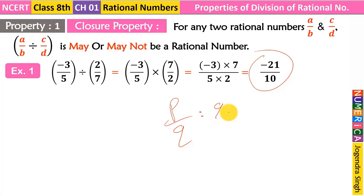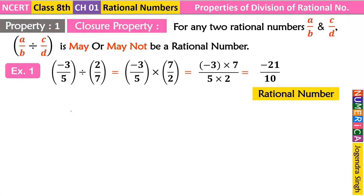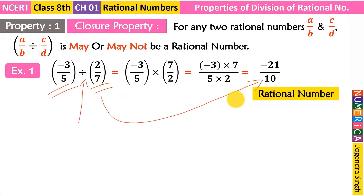The condition for a rational number in P upon Q form is that the denominator cannot be equal to 0. After calculation we got minus 21 upon 10, which is a rational number. So according to this example, rational numbers' division appears to be closed. But we need to check more examples, because a property must hold in any condition.